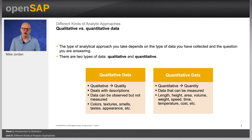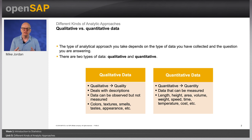Quantitative data are numerical and the analysis will involve statistical techniques. For example, if you analyse a satisfaction survey where participants rated their experience on a scale of 1 to 10, the data is numeric in form and it can be measured. You use statistical techniques to draw conclusions about participants' satisfaction.